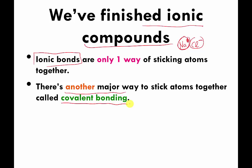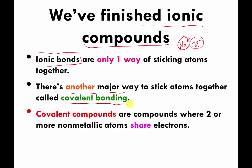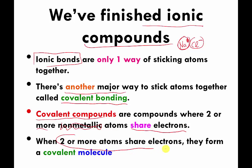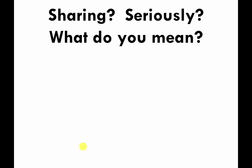Covalent compounds are compounds where two or more atoms share electrons with each other. When two or more atoms share electrons, they make something called a covalent molecule. Let's look at an example to understand what sharing means.